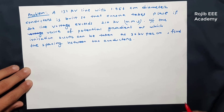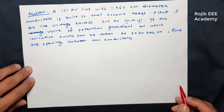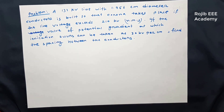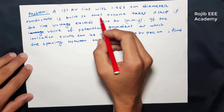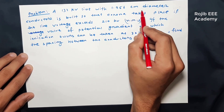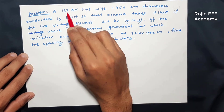Hi, my name is the power system and I am going to show you a video of corona-related director problems. This is a 32 kV line with a centimeter diameter. I am going to show you a line voltage.